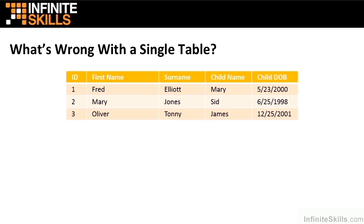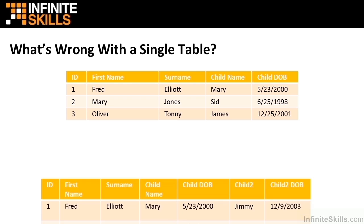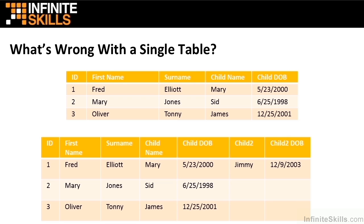Then what happens when somebody has a second child? We have to effectively restructure the database so that we can add in a second child column and a second child date of birth column. Not too bad yet. But then what happens when somebody has a third child?